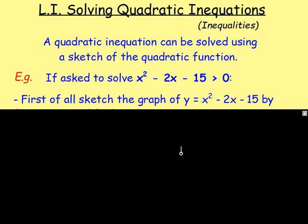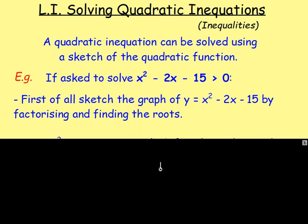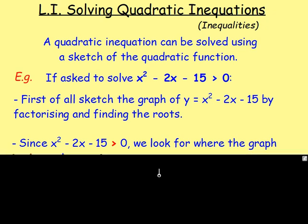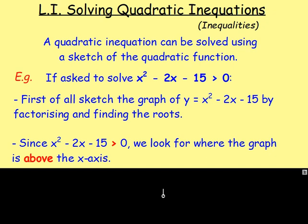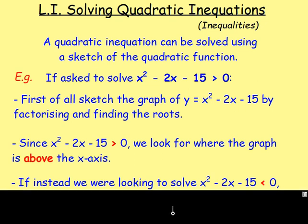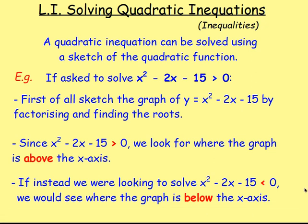You have to solve it using a sketch. First of all you would sketch the graph of y equals x squared minus 2x minus 15 by factorising and then finding the roots. If you sketch it then you can look at the graph. If it tells you that x squared minus 2x minus 15 is bigger than zero, remember this is really y, so it's saying y is bigger than zero — and y is bigger than zero above the x-axis. If instead you were solving where it's less than zero, you're looking for y less than zero, which is below the x-axis. Let's try a few examples.